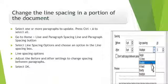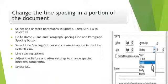To change the line spacing in a portion of the document, select one or more paragraphs to update, or press Ctrl+A to select all. Go to Home, then click the Line and Paragraph Spacing button. Select a line spacing option and choose an option in the line spacing box. Adjust the before and after settings to change spacing between paragraphs, then select OK. As shown in the figure, you can select multiple line spacing options.